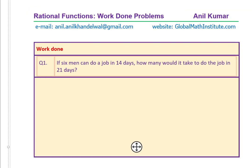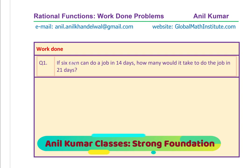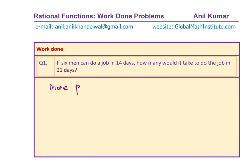Let us look into the solution of the very first question, which covers the basic concept of work done. The question is: if six men can do a job in 14 days, how many would it take to do the job in 21 days? More number of men means fewer days. So remember: more persons, less time. That means we are talking about an inversely proportional relationship.